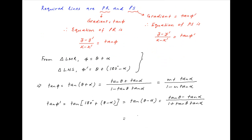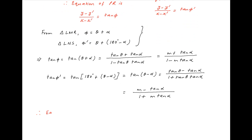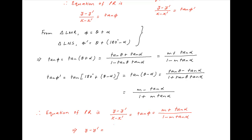Now, since tan theta equals m, tan phi-dash is equal to m minus tan alpha upon 1 plus m times tan alpha. Using these results, the equation of PR is: y minus y-dash upon x minus x-dash is equal to tan phi, which equals m plus tan alpha upon 1 minus m times tan alpha. This can be written as y minus y-dash is equal to m plus tan alpha upon 1 minus m times tan alpha, multiplied by x minus x-dash.